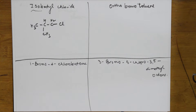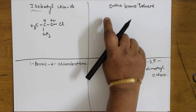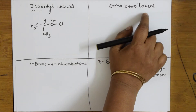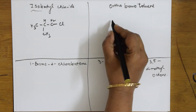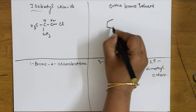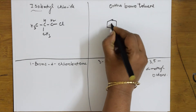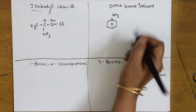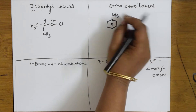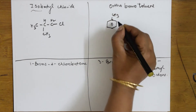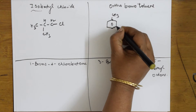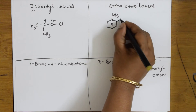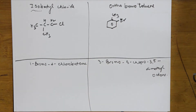Next, they give me ortho-bromotoluene. Toluene is benzene with a CH₃ group. At the ortho position there is a bromo group. Ortho, meta, and para positions are defined on the benzene ring — this is bromine at the ortho position. Done.